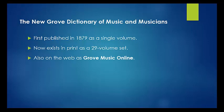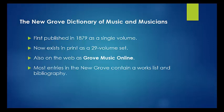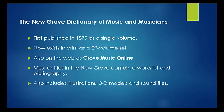Use the entry date stamps to verify when each article was last updated. Most entries in the New Grove contain a number of useful features including a bibliography and a works list. The New Grove also contains a number of illustrations, 3D models of instruments, and sound files related to musical examples.